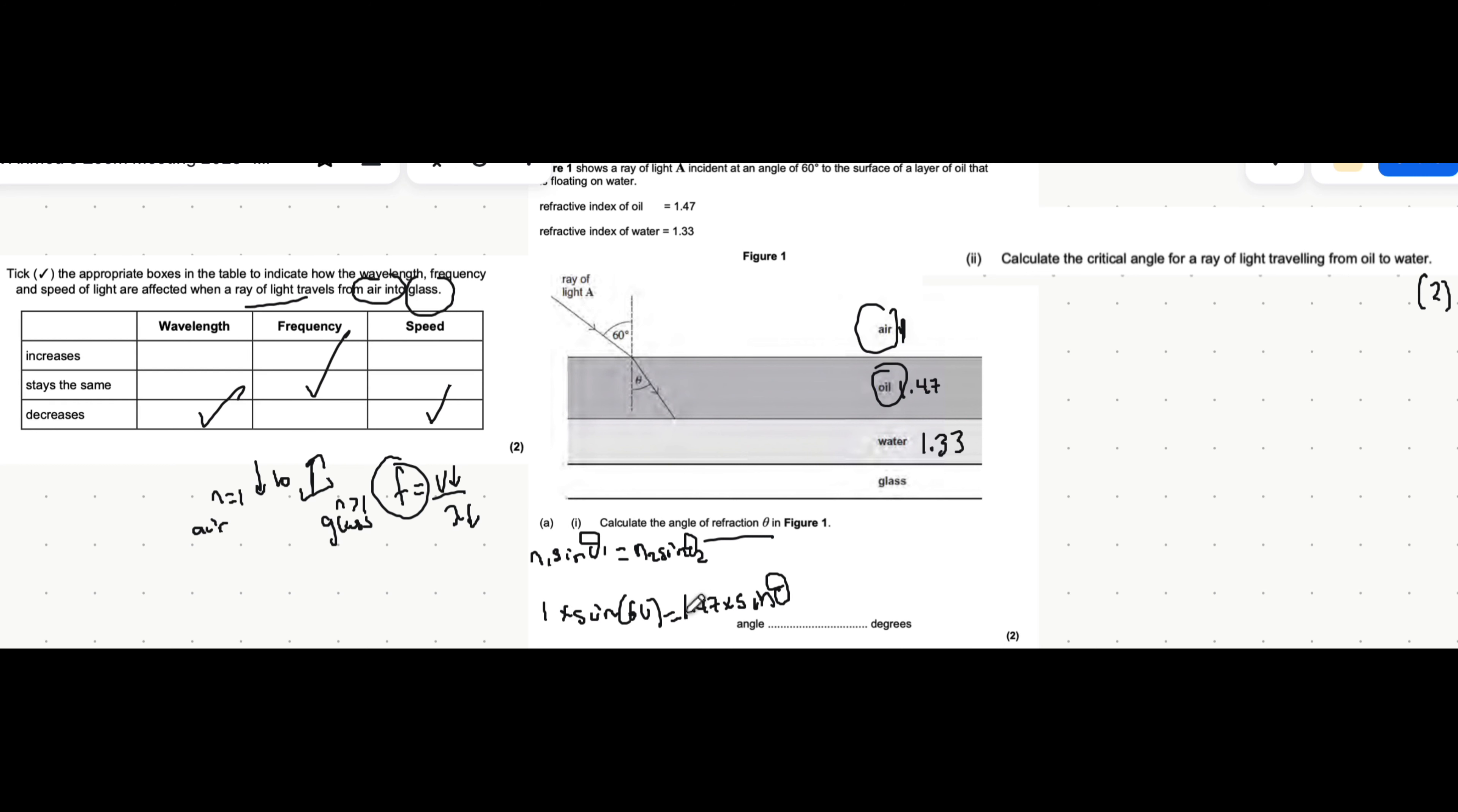To get theta alone, we start by dividing both sides by 1.47. So it becomes all of this over 1.47. And then to get theta alone from there, we do the inverse sine of both sides. I'm just combining everything here so I don't waste too much time writing everything out. So inverse sine of all of this gives you the angle theta, which I'm just going to quickly do on my calculator. Writing it like this in an exam is fine, by the way. You'll still get full marks.